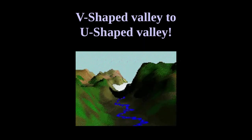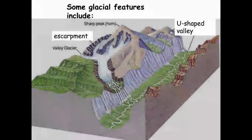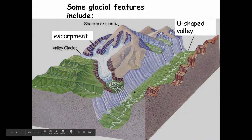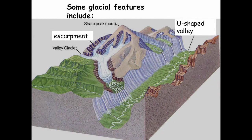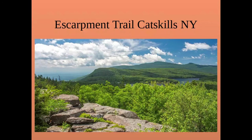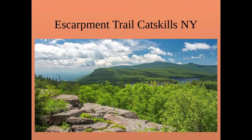When a glacier retreats, it leaves behind features including hanging valleys and escarpments. An escarpment is a very sharp edge generally separating areas of different elevations, such as from a plateau to a valley. The Escarpment Trail in the Catskills near North Lake and South Lake is an example, with a significant drop-off overlooking the Hudson River Valley.